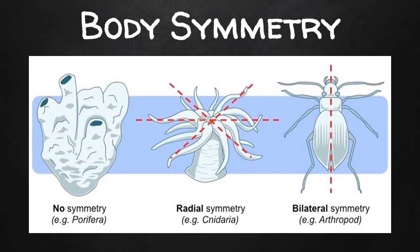The symmetry of an animal's body is a trend in the classification of animals. Body symmetry refers to how alike or different the halves of the body are, depending on where you divide it. There are three types of body symmetry in animals: asymmetry, radial symmetry, and bilateral symmetry, pictured here.